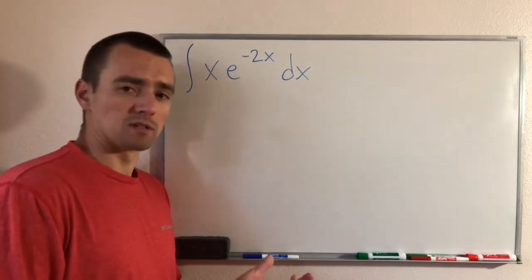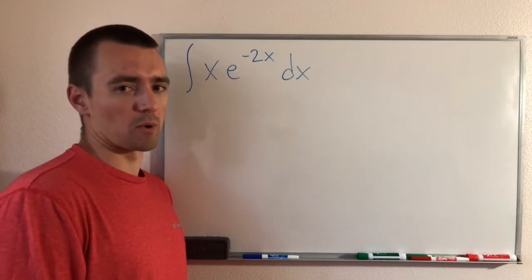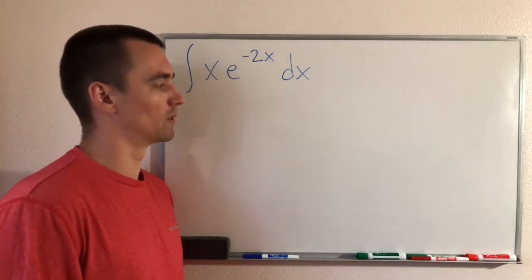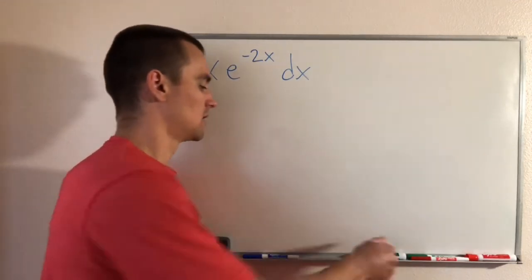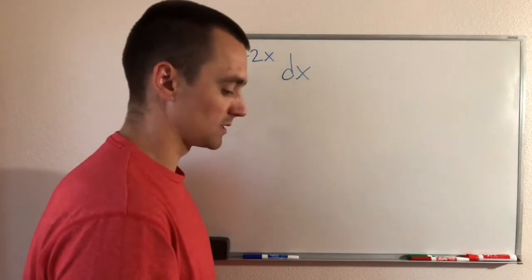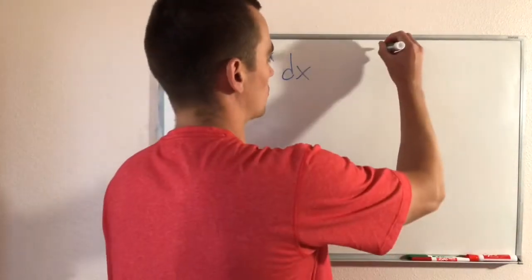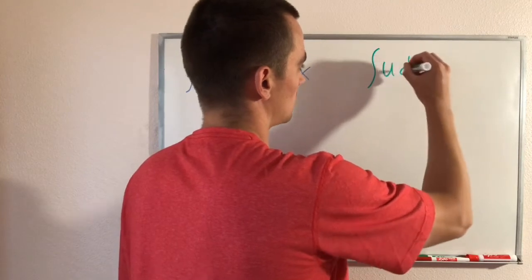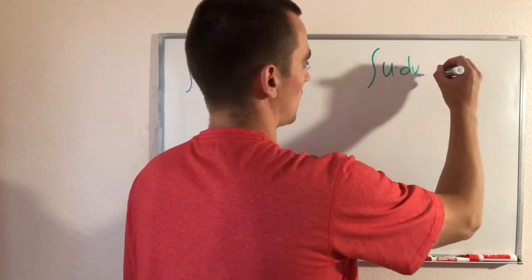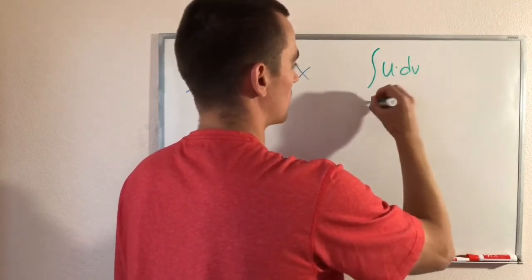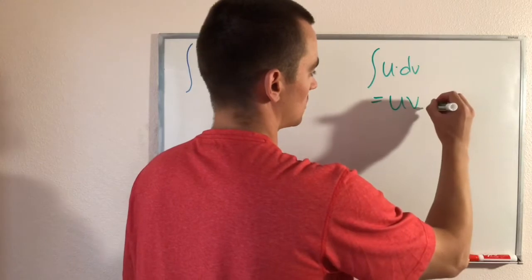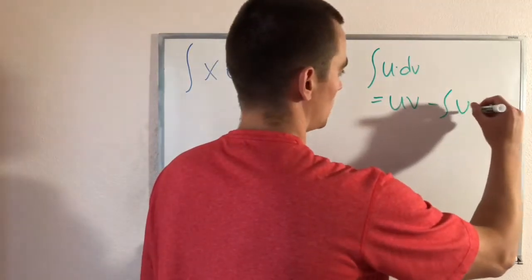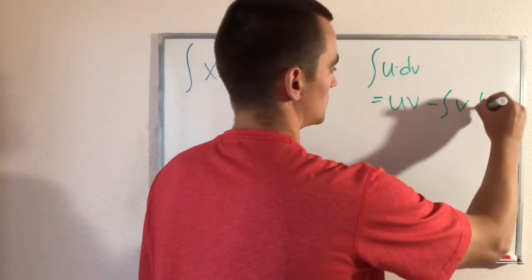This problem would most easily be solved by using integration by parts. So I'll start out by writing a formula for what that is. Integration by parts says if we have the integral of u times dv, that would be equivalent to u times v minus the integral of v times du.